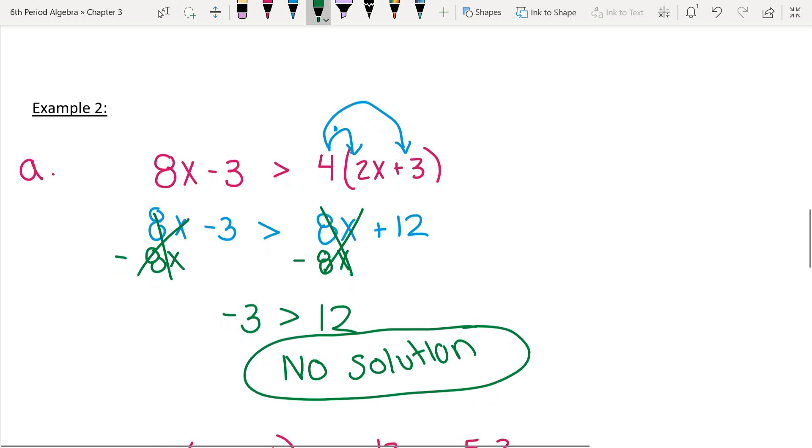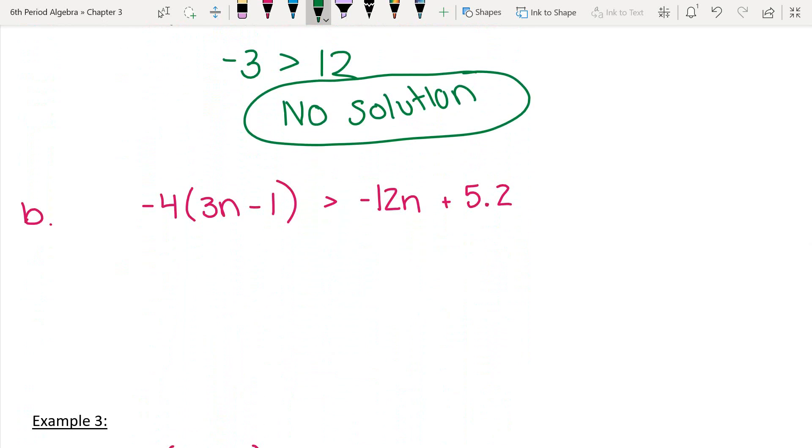I want you guys to try B. Please pause and attempt it. Alright, let's see how you did. You should have started off by cleaning up the left-hand side by multiplying in the negative 4. That's a distributive property. And you should have gotten negative 12n plus 4, because two negatives make a positive, greater than negative 12n plus 5.2. And again, I'm probably going to move this negative 12 from the right to the left. I do that just because I like to move variables to the left more often. It doesn't really matter, though. So, I'm going to do that by adding 12n. And you're left with 4 greater than 5.2. Well, it's a whole number 4 compared to 5 and some change. And that is a ridiculous statement. 4 is smaller than 5 in any way. So, this is actually a no solution as well.